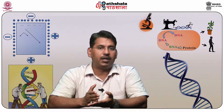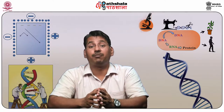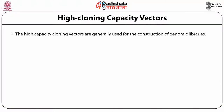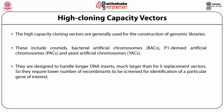When normal M13 is used as helper phage, it provides the necessary replicating enzymes and phage coat proteins. High cloning capacity vectors are generally used for construction of genomic libraries. These include cosmids, bacterial artificial chromosomes, P1-derived artificial chromosomes, and yeast artificial chromosomes. They are designed to handle much larger DNA inserts than lambda replacement vectors, so they require a lower number of recombinants to be screened for identification of a particular gene insert.